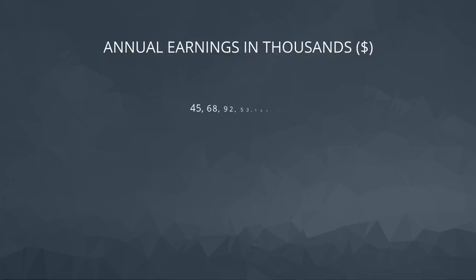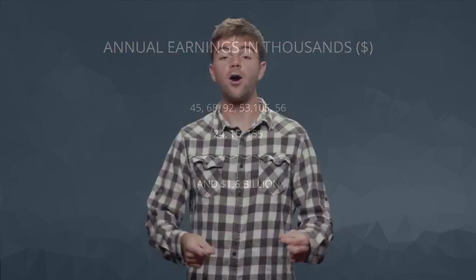In order to illustrate the impact that outliers can have on the way we report summary statistics, let's consider the salaries of entrepreneurs. Imagine I select 10 entrepreneur earnings — 9 values here as earnings in thousands of dollars, and the 10th is the CEO of Facebook. According to a post by CNN in 2016, he earned 4.4 million dollars per day.